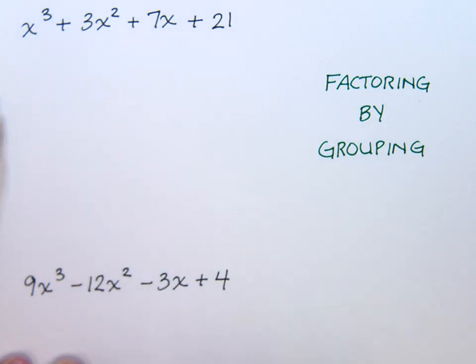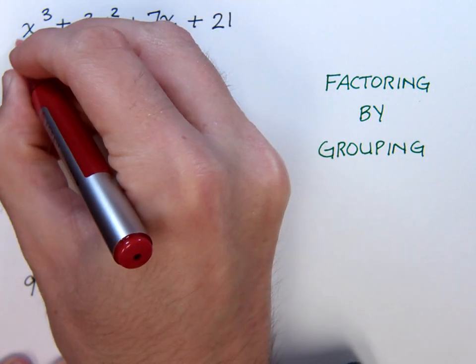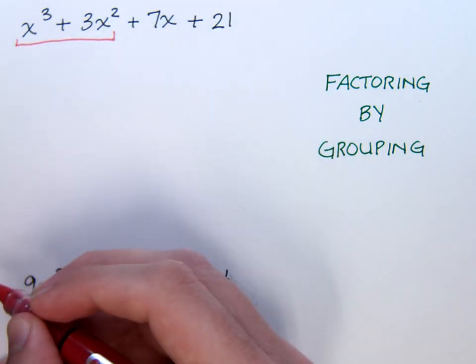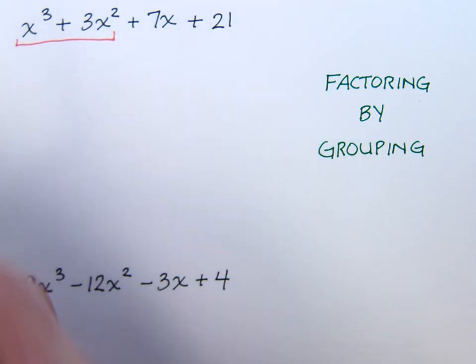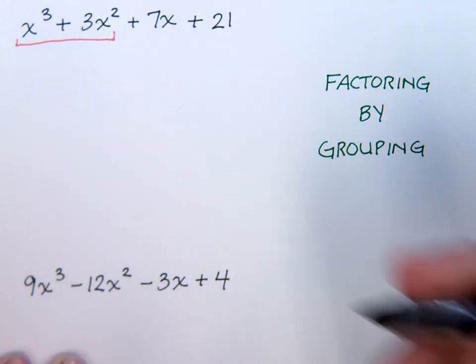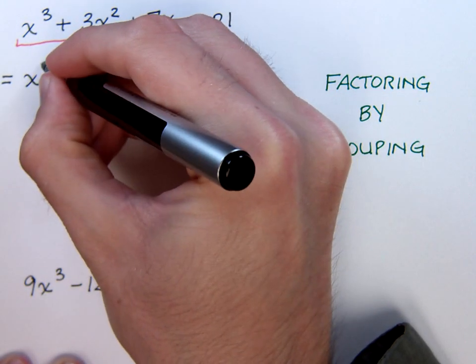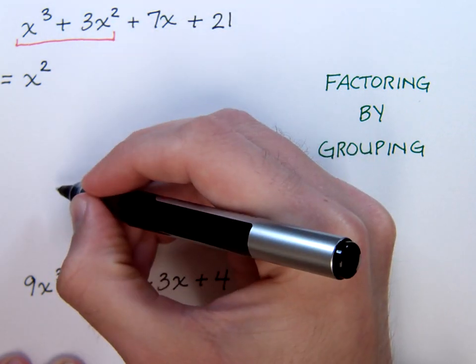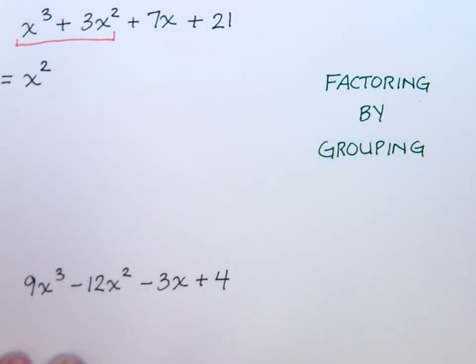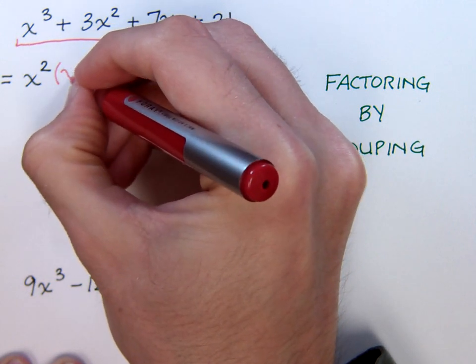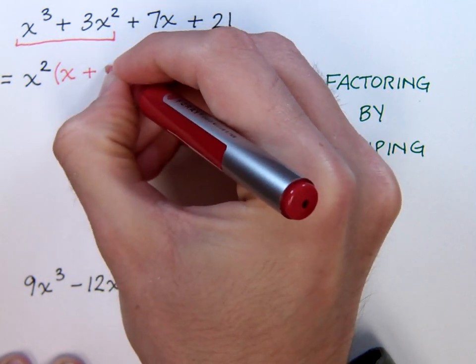If we look at this first problem, we have four terms. In this first group, there's a common factor. The common factor for that group is simply x squared. When I take out x squared, what will I have left? I'm just going to have x plus three.